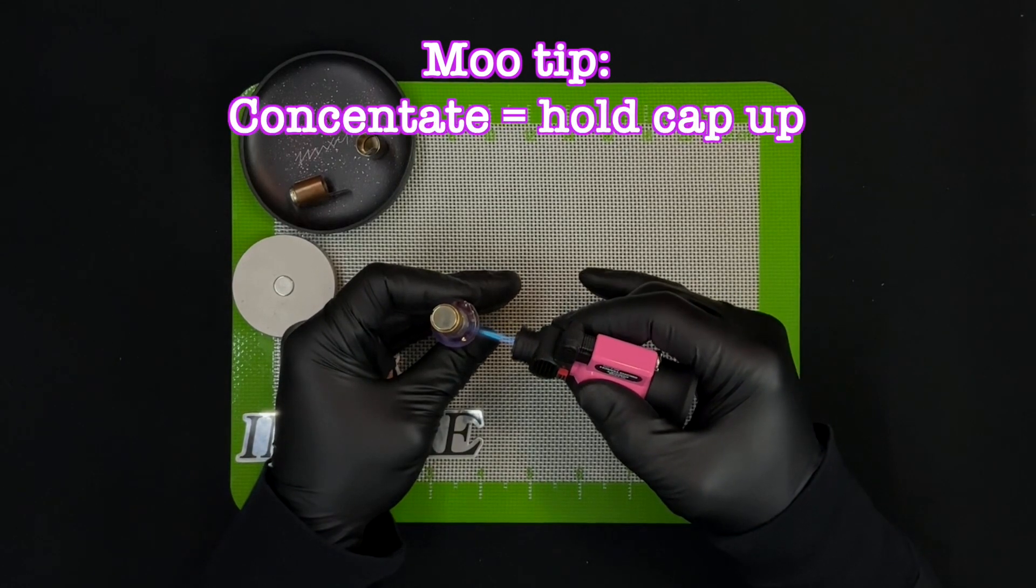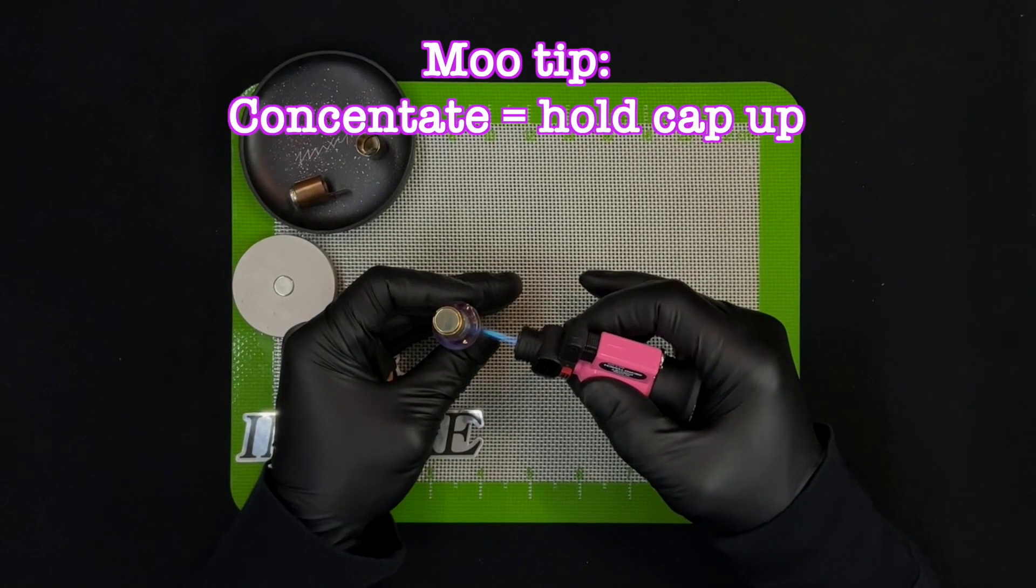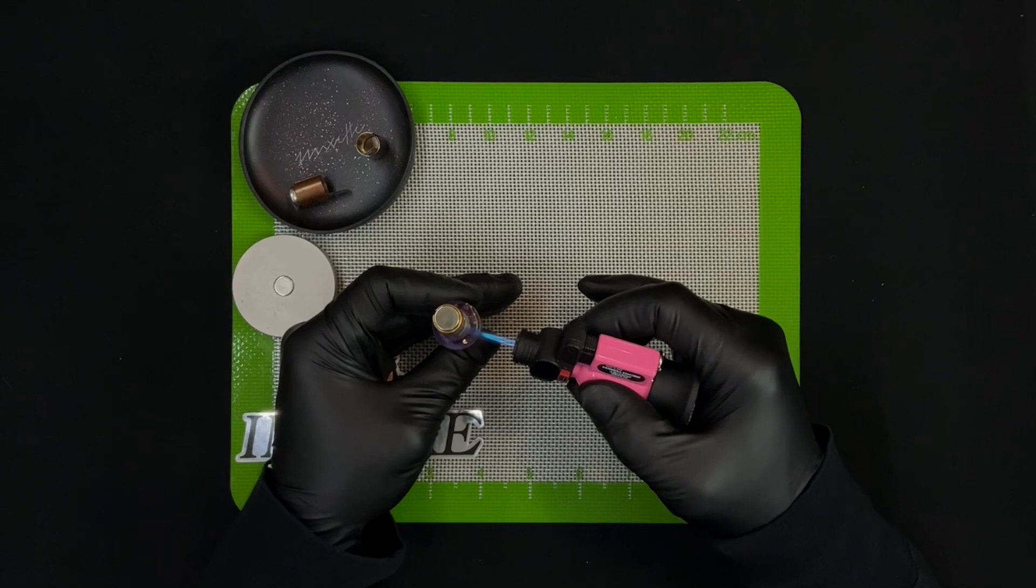If I do double deckers or concentrate bowls, what I'll do is I'll hold the VapCap like this so all the concentrate melts to the bottom first. First click. Second click.